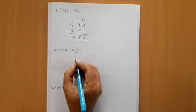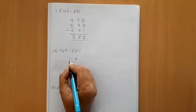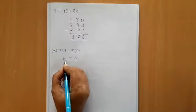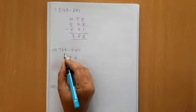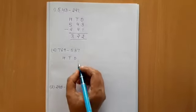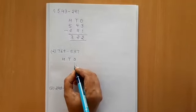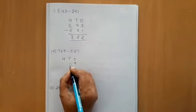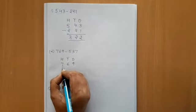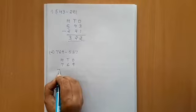Now, second sum. First, we will write 1's, tens, 100. Now, we will write 769. 9, 6, 7. We will put the sign of minus.